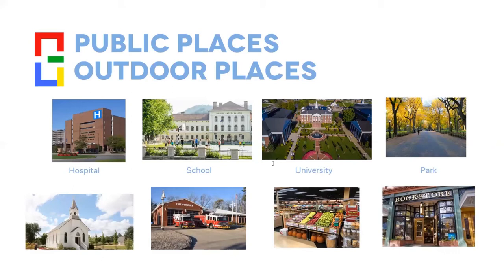Students say: church. Remember the 'u' is pronounced differently — it's 'church,' not 'chur.' Church, church. Let's see what the image is — yes, it is a church. So now we have: hospital, school, university, park, church. The next image — students are already writing 'fire station.' Very good — fire station!